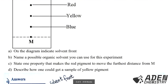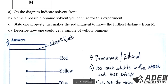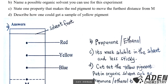Part C: state one property that makes the red pigment move the farthest distance from M. If you check, red has moved to the farthest point from M. The reason is that red is the most soluble pigment in the solvent, and it is also less sticky — that is why it has traveled the farthest distance from M.